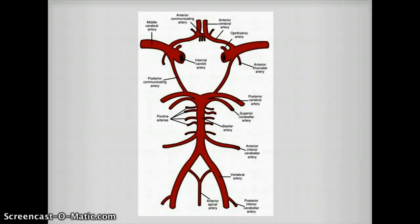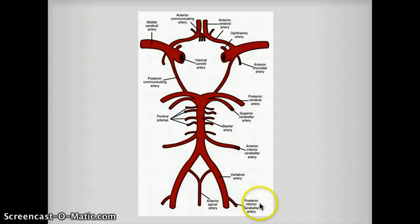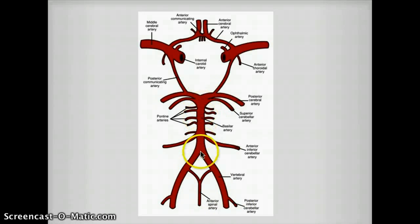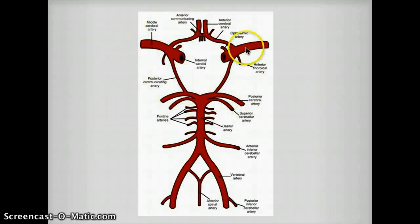The next diagram is the blood supply of the brain. You can see that PICA — the posterior inferior cerebellar artery — if damaged, causes lateral medullary syndrome. The anterior spinal artery is right in the middle, stemming from the two vertebral arteries, and is responsible for medial medullary syndrome. The two vertebral arteries join to make the basilar artery in the middle. These are the pontine arteries branching off the basilar artery, followed by the superior cerebellar artery, posterior cerebral artery, and then the posterior communicating artery, moving on to the circle of Willis.